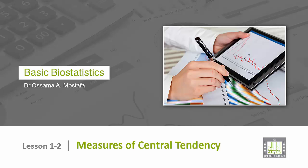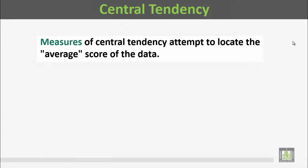We are still in the first unit of descriptive statistics. This is the second lesson: Measures of Central Tendency — مقاييس النزع أو الميل نحو المركز.